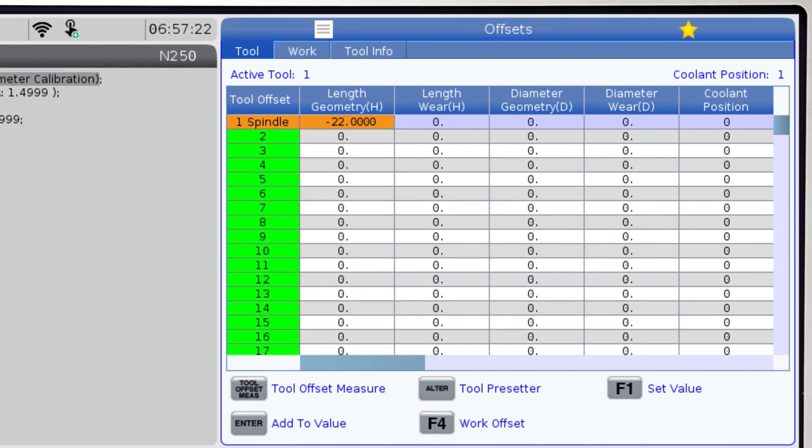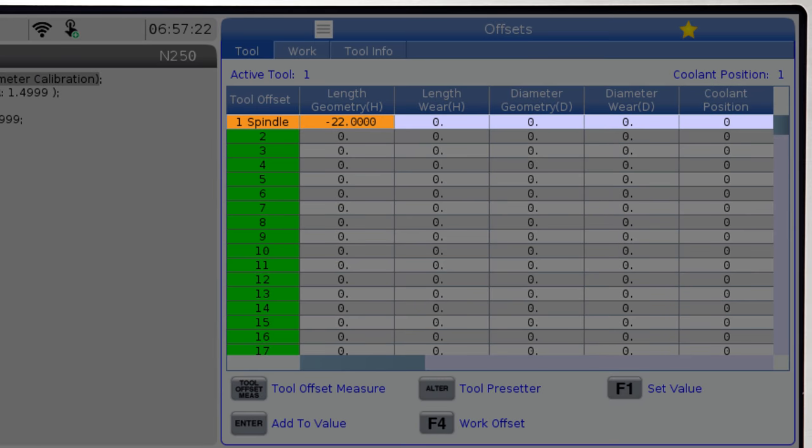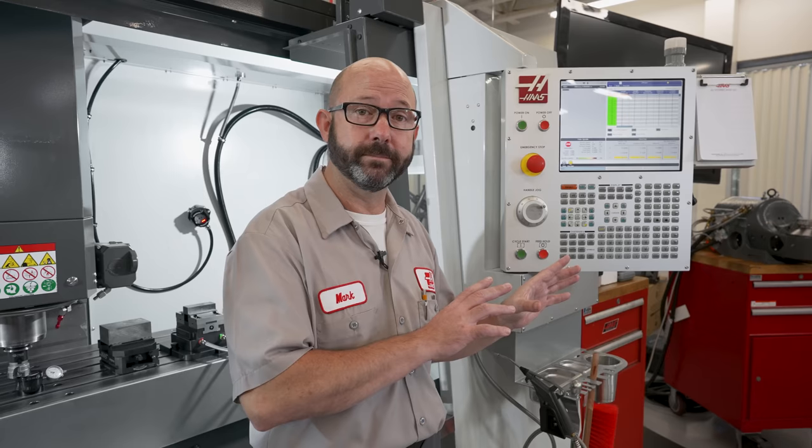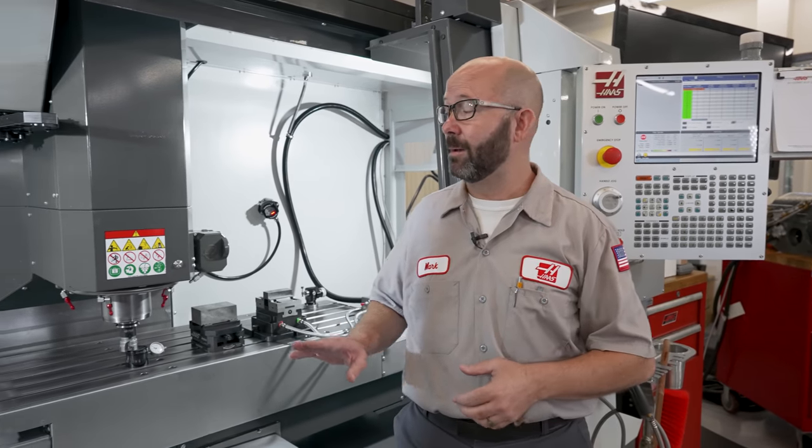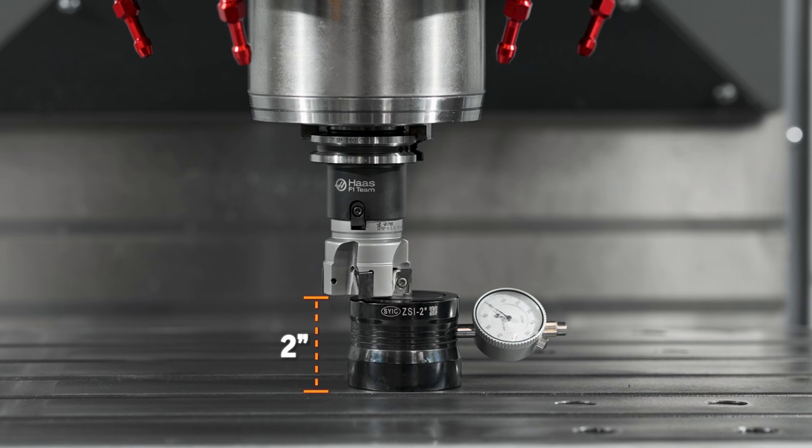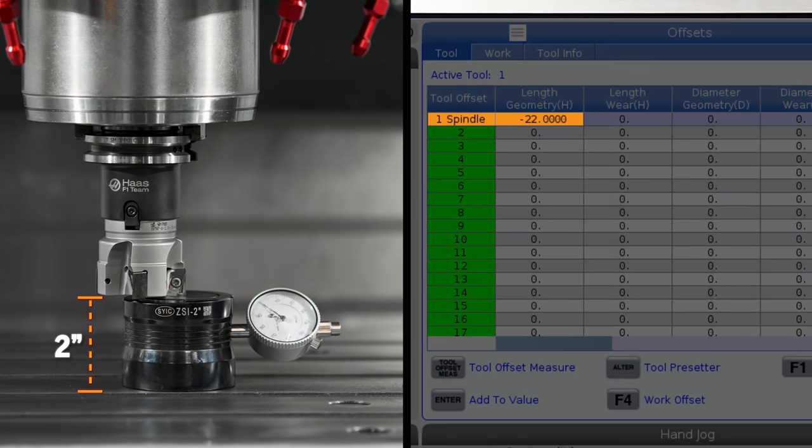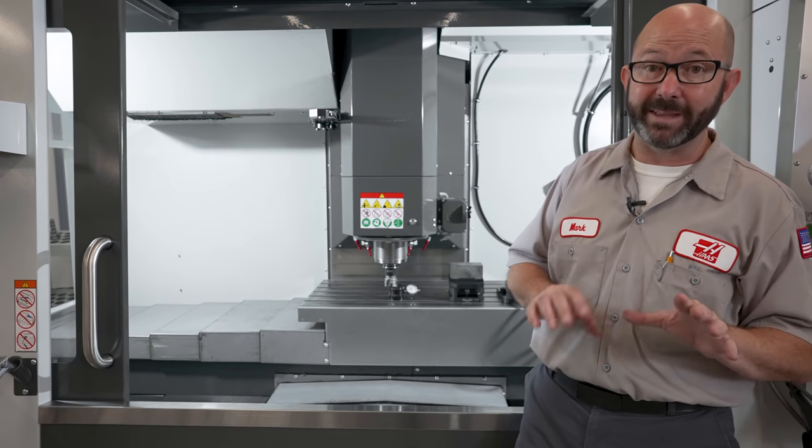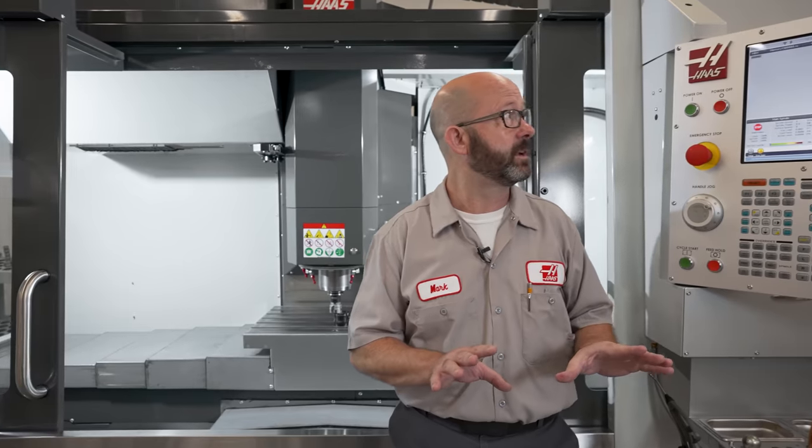Tool one, offset one. Now we've set our tool, but we didn't set it on our machine table; we set it two inches above our table. That's the height of our tool setter, and we need to subtract that value from our tool length offset. But that can be done in a couple different ways.